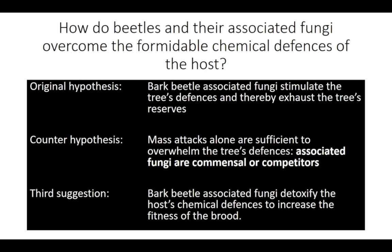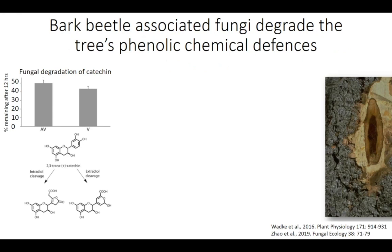A third perspective has recently emerged: mass attacks are important for adult beetles in overcoming host defenses, but the fungi are important for increasing the fitness of the offspring of the attacking bark beetles by detoxifying the defenses in the phloem. That bark beetle-associated fungi degrade phenolic compounds has been shown quite convincingly over the last few years. I have selected catechin, a subunit of condensed tannins, as an example.